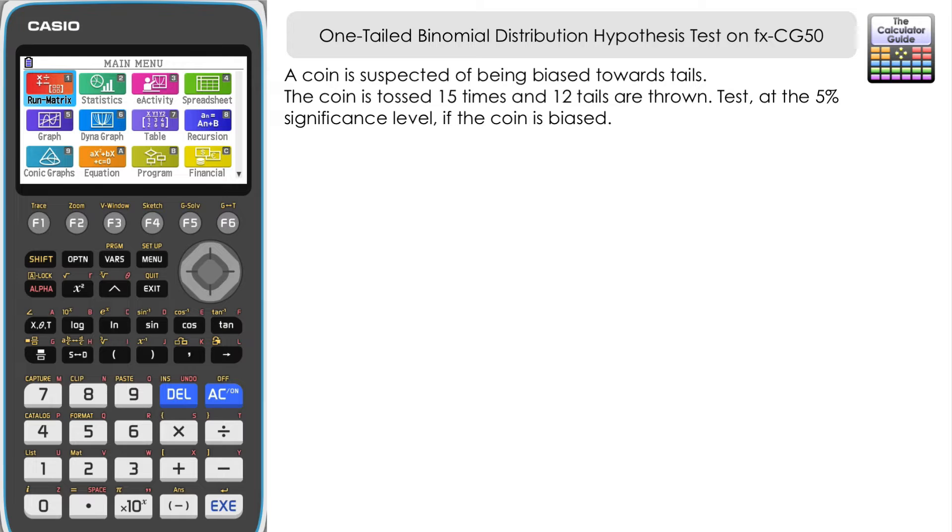A coin is suspected of being biased towards tails. The coin is tossed 15 times and 12 tails are thrown. Test at the 5% significance level if the coin is biased.